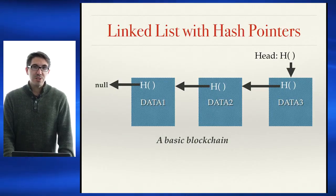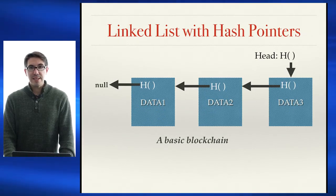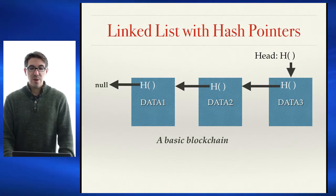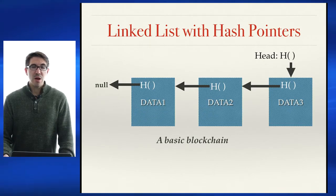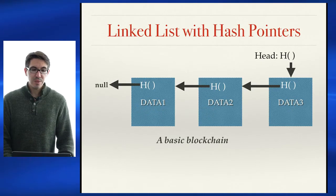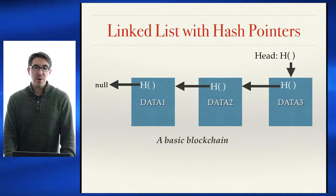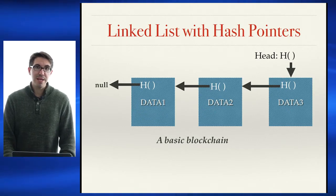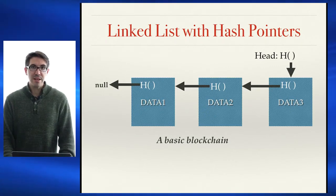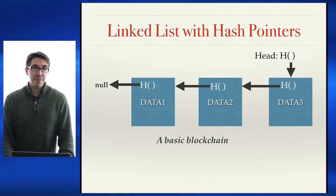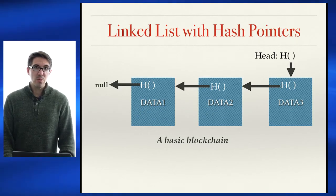One of the first data structures you probably learned in a data structures class was a linked list — simply a list where each individual node or element of data points to another node, all the way until null, indicating the end of the list. If we replace those pointers with hash pointers, we now have a basic blockchain. Here we can look at the head hash pointer which points to the head of the linked list. I see that there is data 3 stored there, with a hash pointer pointing back to the node storing data 2, and from there a hash pointer pointing back to the node storing data 1, which points to null.